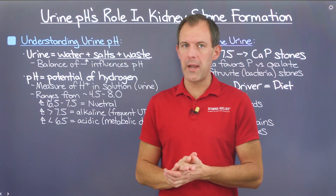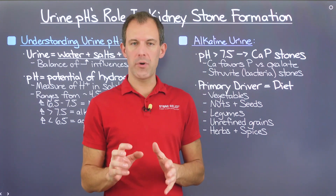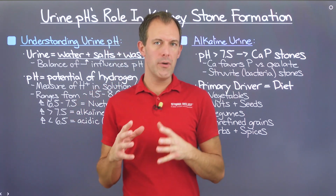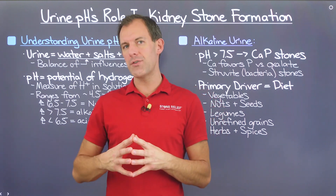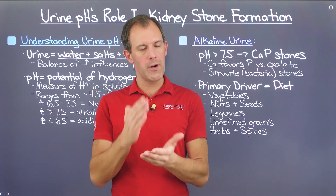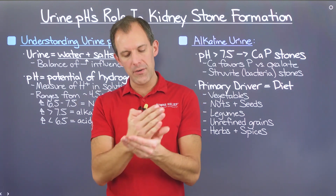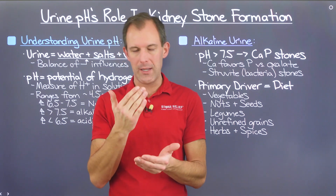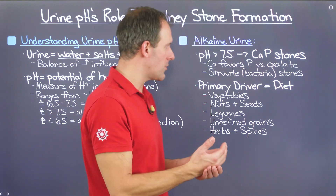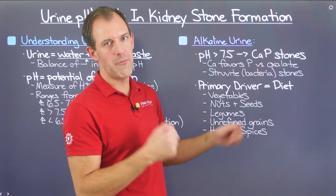Now that we have an understanding of what urine pH is, let's talk about alkaline urine. Alkaline urine exists when you have a urine pH over 7.5. If you're getting a consistent pH reading over 7.5, that's alkaline. Unfortunately, alkaline urine sets you up for calcium phosphate stones.